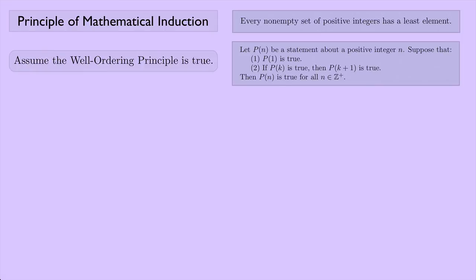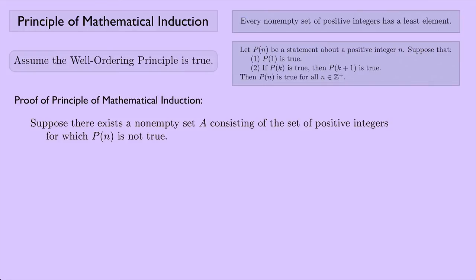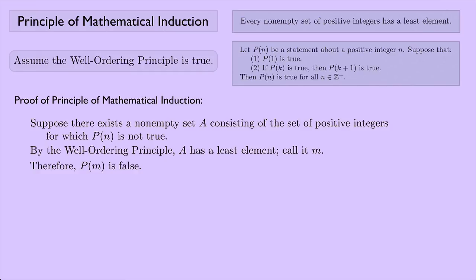Now for the formal proof. We assume the well-ordering principle is true and use it to prove the principle of mathematical induction. Suppose there exists a non-empty set A consisting of the positive integers for which P(n) is not true. By the well-ordering principle, A has a least element — call it M. Therefore P(M) is false, because the elements of A are exactly those for which P(n) is not true. Since P(1) is true, M cannot be 1.